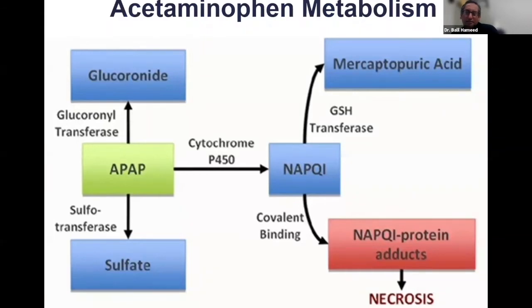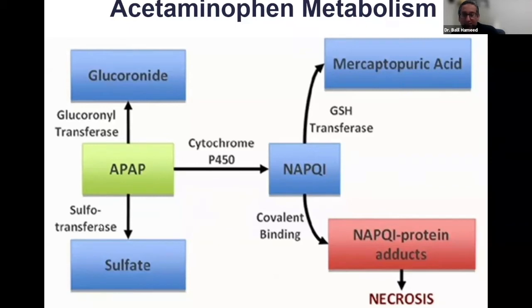Why does acetaminophen cause acute liver failure? Normally, the body uses glucuronyl transferase or sulfotransferase to convert acetaminophen into two non-toxic metabolites that are easily excreted. But when these two enzymes are overwhelmed — or when you take an excess amount of acetaminophen — the remaining acetaminophen uses the cytochrome P450 system in the liver and is converted into NAPQI.